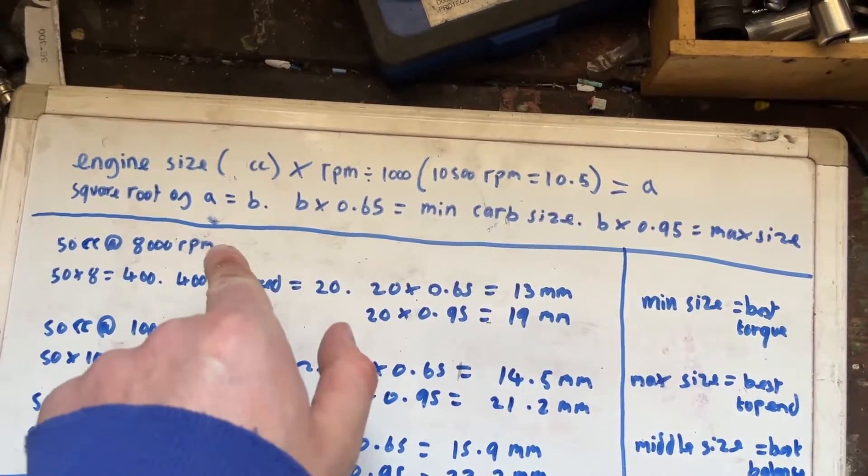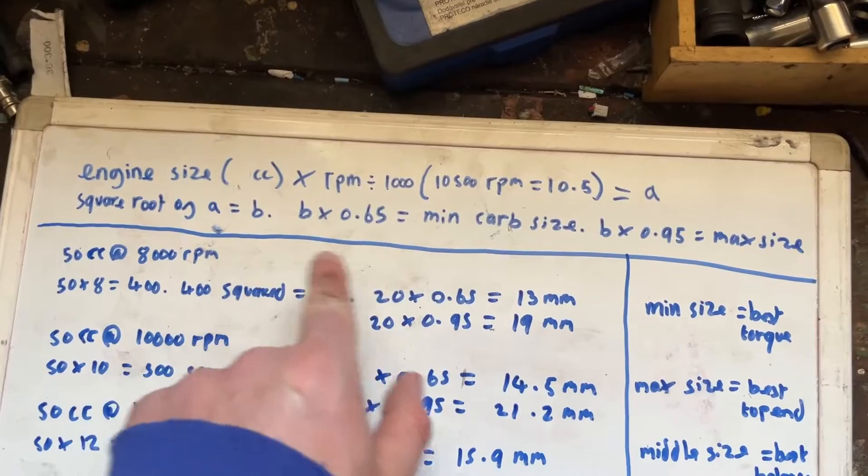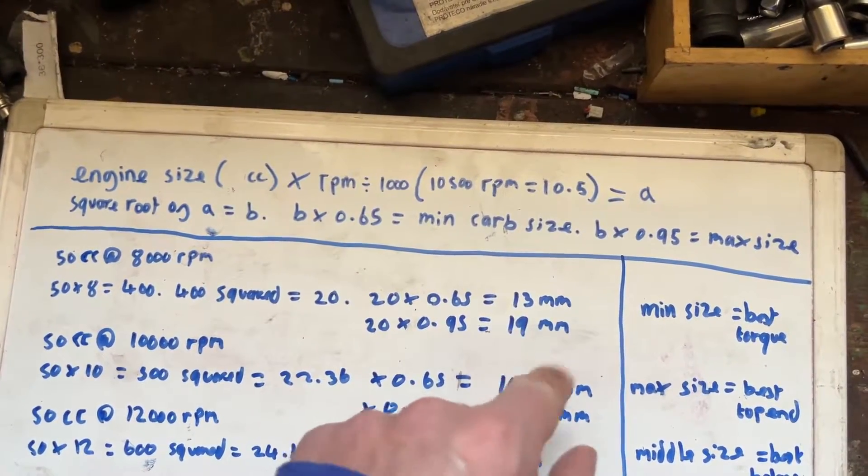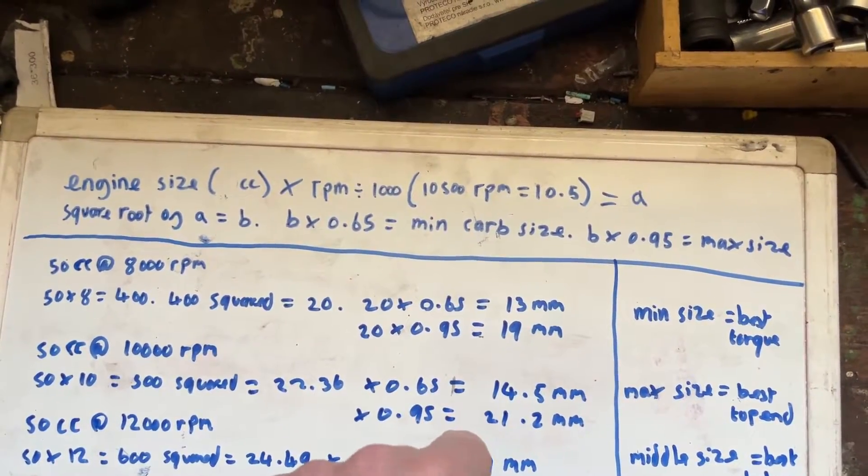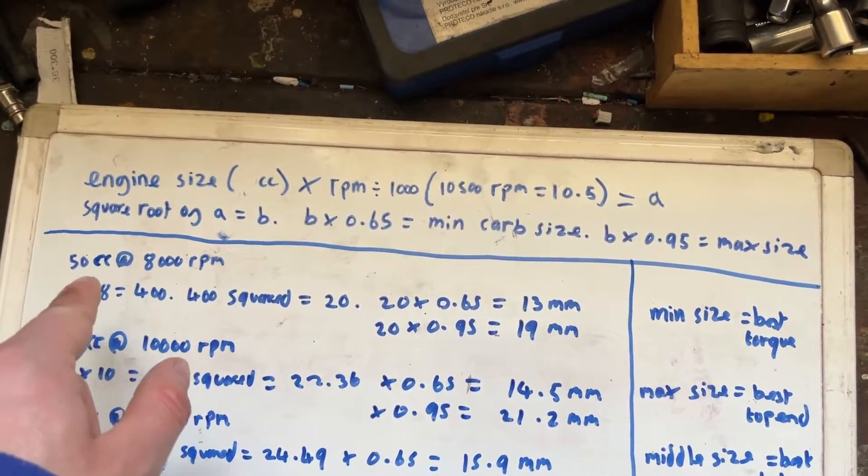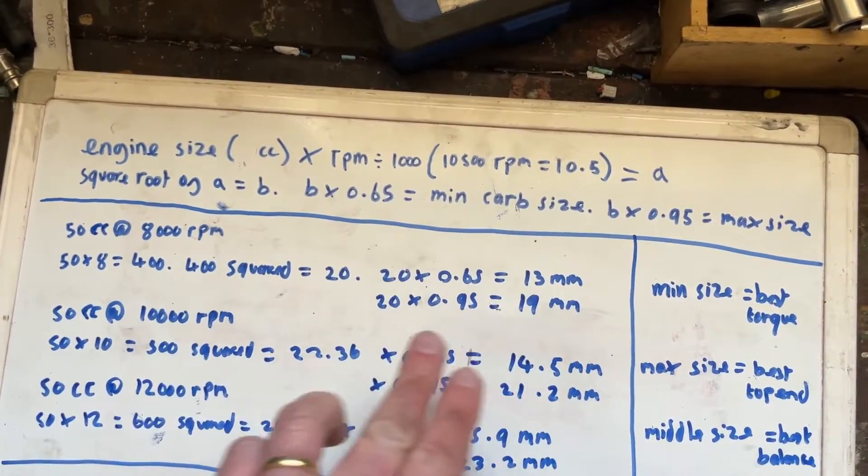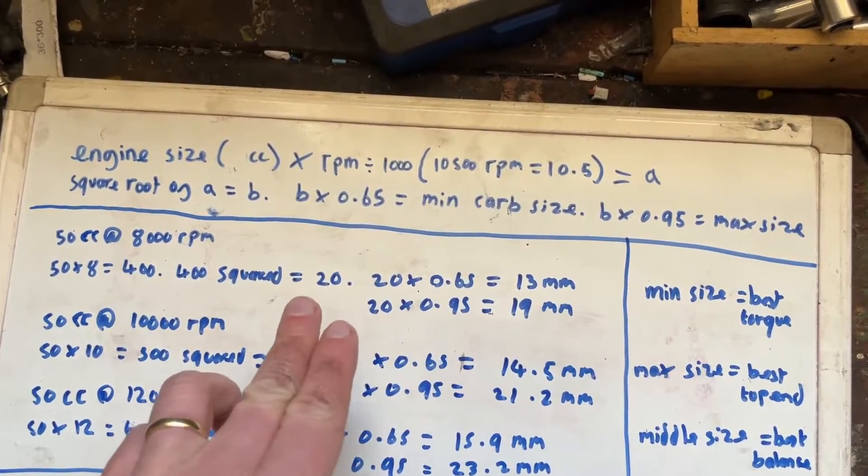So sometimes they'll have a smaller carburetor to restrict them or sometimes they'll have the proper size carburetor and just have like a restrictor ring or some restriction in the airbox to restrict the power of the 50cc engine to whatever the legal limits are. But these figures are based on a de-restricted engine.